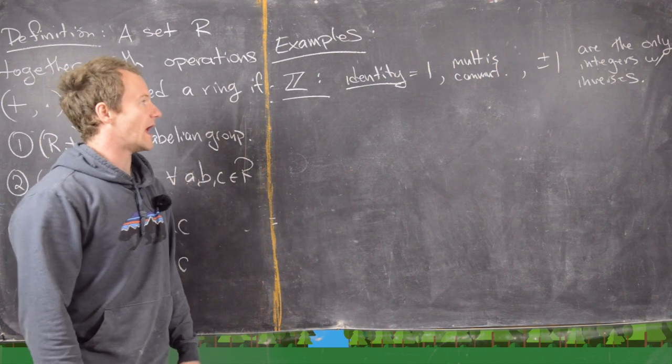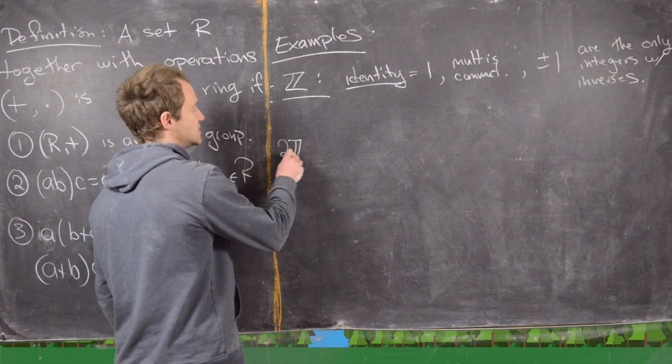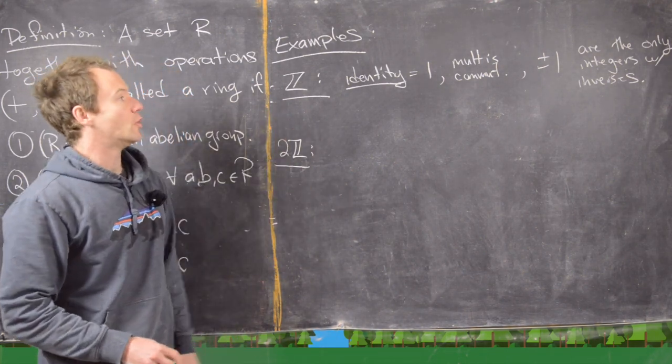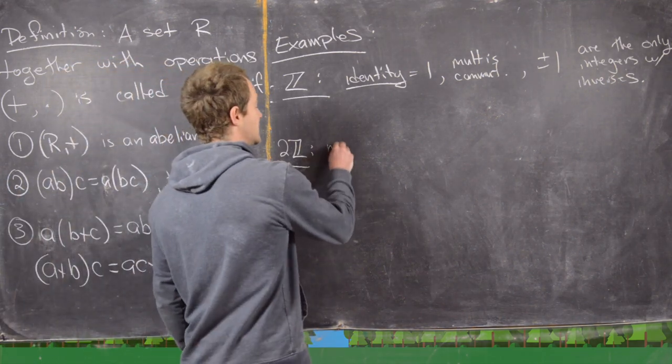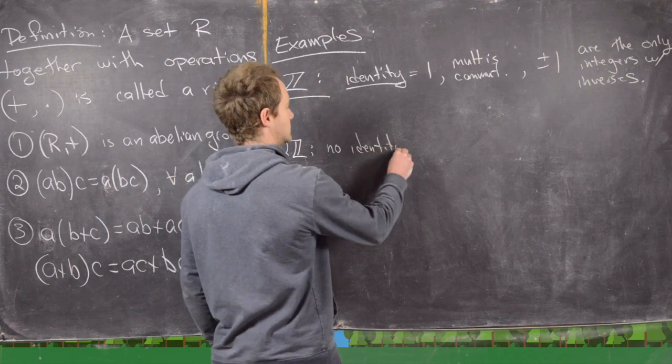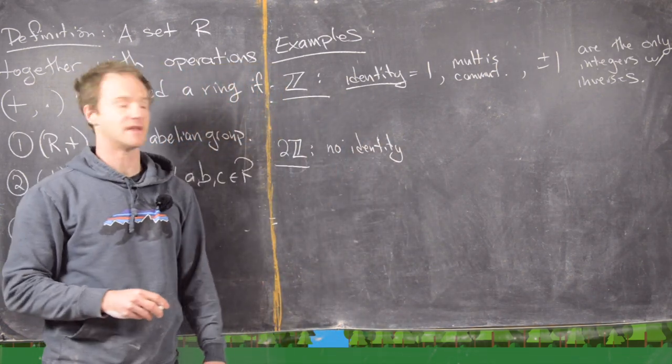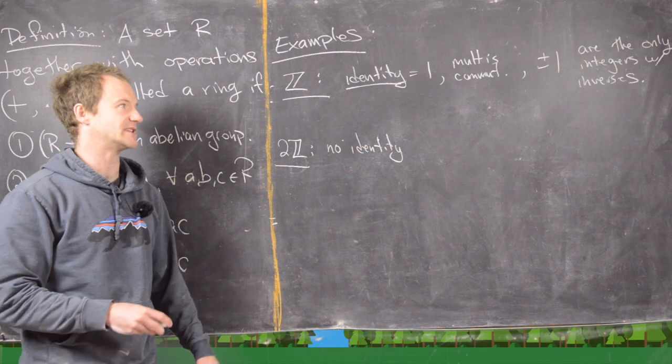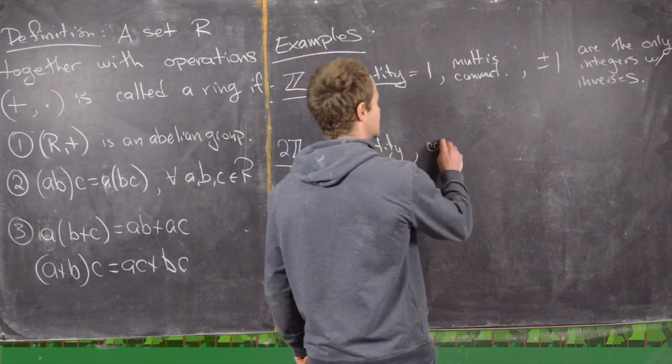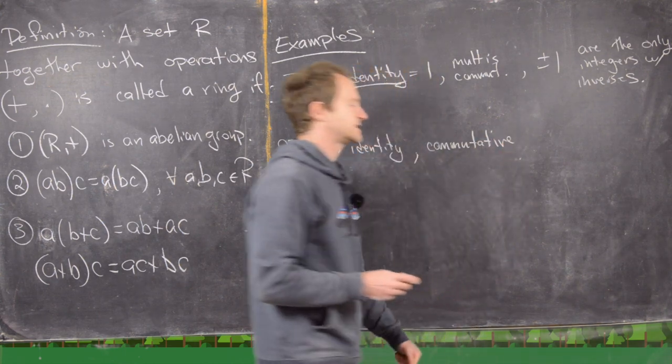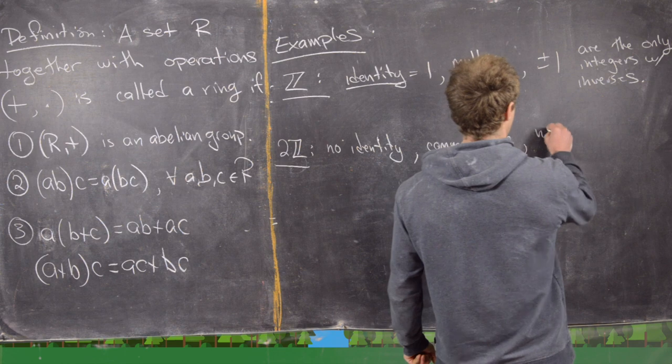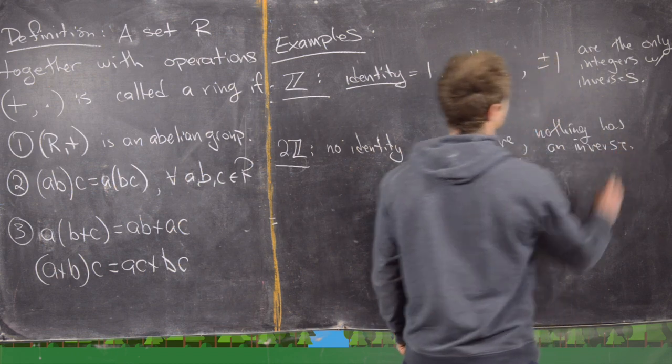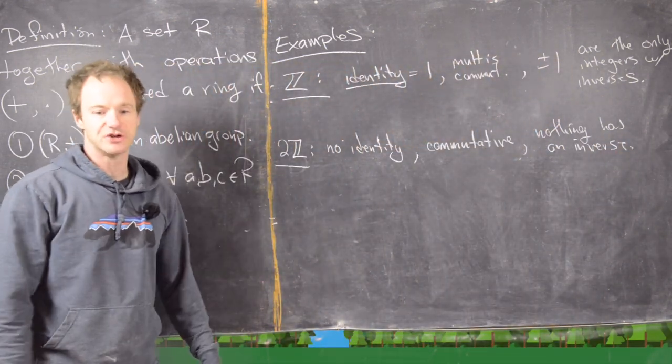So now let's say maybe 2Z. So that's going to be a substructure of Z. And notice that we get some of these but not all of these. So notice there's going to be no identity in this case. That's because we took away the number 1. Notice here everything is even. We just have 0, plus minus 2, plus minus 4, plus minus 6, and so on and so forth. We do have commutativity. So it is commutative. But then nothing has an inverse. So that's our setup for 2Z.